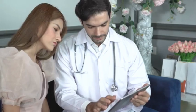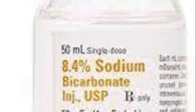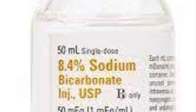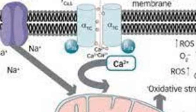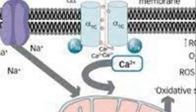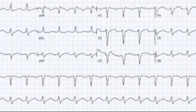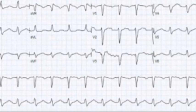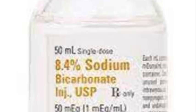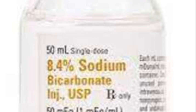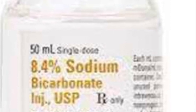Treatment Response: The patient's clinical improvement following the administration of sodium bicarbonate provides a practical illustration of the therapeutic principles. Sodium bicarbonate increases extracellular sodium concentration, which competes with Flecainide for the fast sodium channels in the heart. This competition facilitates the dissociation of Flecainide from the sodium channels, thereby reversing the toxic effects on cardiac conduction. The observed narrowing of the QRS complex reflects restoration of more normal cardiac conduction, reinforcing the importance of timely and appropriate management in cases of Flecainide toxicity.